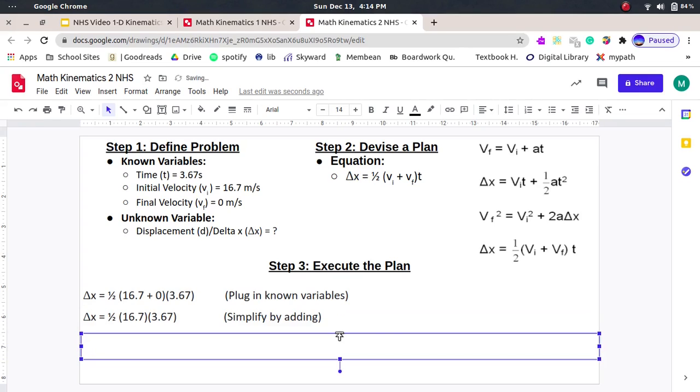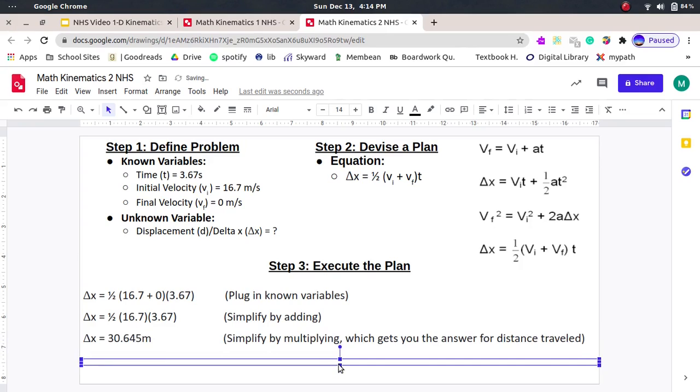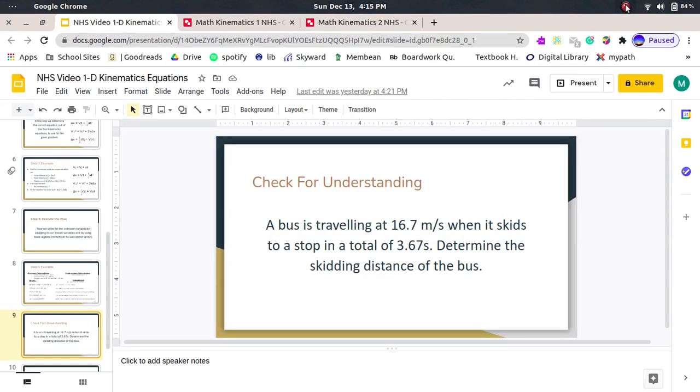Our next step is then to simplify by adding just the 16.7 plus zero, which should be easy math there, which is 16.7. And now in order to find delta x, we're just going to multiply all three of those numbers together, which should get you about 30.645 meters. Hopefully that's what you guys got, and hopefully you guys learned something from this video. Thanks for watchin'.